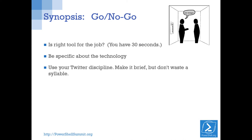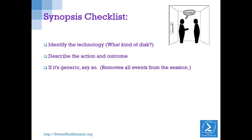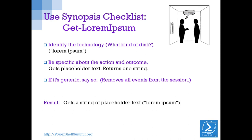I write the synopsis last — it's a summary, and I can't summarize something I haven't written. Even though it's at the top, write it last. The synopsis is the go/no-go for the user: it should tell them at a glance whether this is the right tool for the job. The checklist: identify the technology, describe the action and outcome, and say if it's generic. For Get-LoremIpsum: the technology is Lorem Ipsum, it gets placeholder text, it returns a string. So my synopsis is 'Gets a string of placeholder text. Lorem Ipsum.'